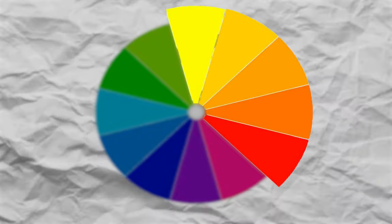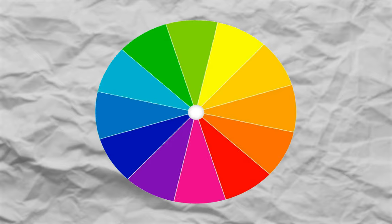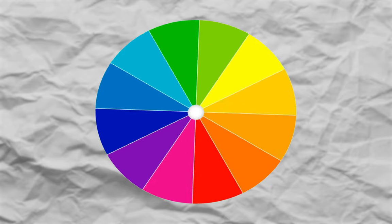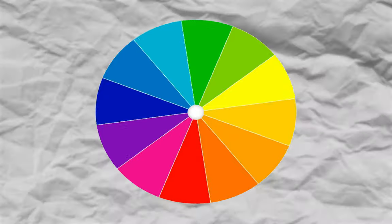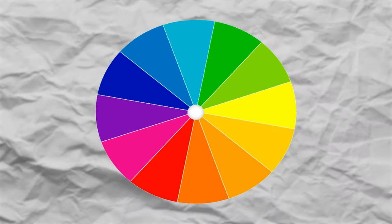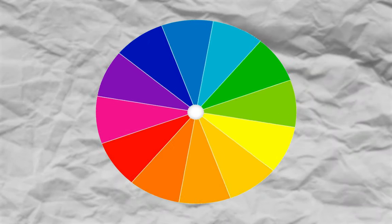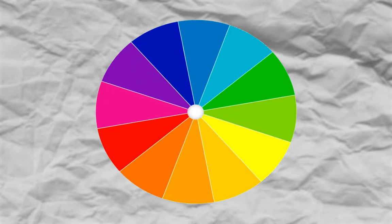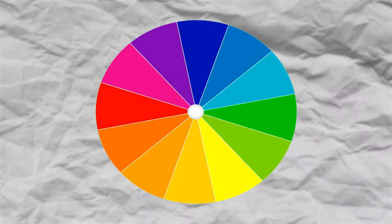Which brings me to color temperature. Color temperature is how warm or how cool a color is. If we want warm reds, we end up seeing lots of yellows in reds, giving us more oranges. If we want cool reds, we end up seeing more blues in there, giving us magenta, purple, blue, and so on.